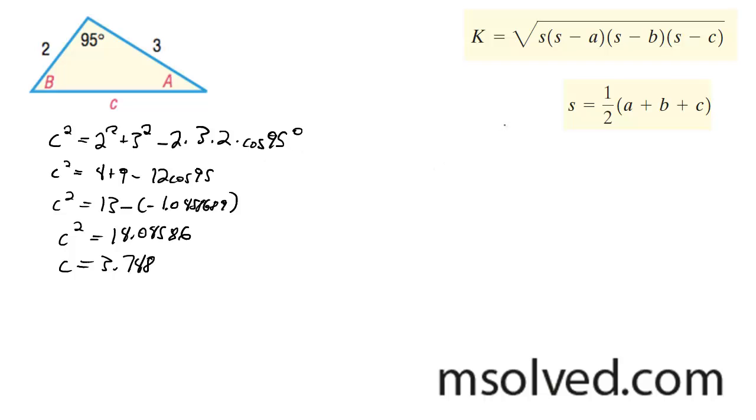Now we need to find s, our s value, so that's going to be s equal to one half of 2 plus 3 plus 3.748. That's going to get me 4.374.